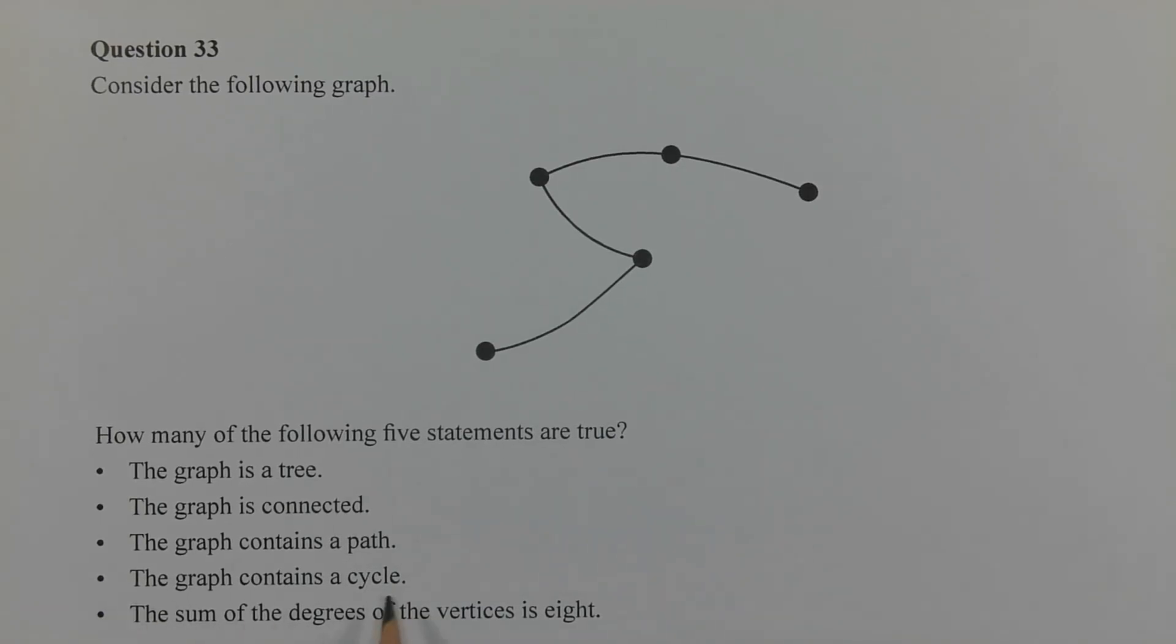Let's consider the fourth statement. The graph contains a cycle. Well if the graph is a tree then it cannot contain a cycle. So the fourth statement is incorrect.